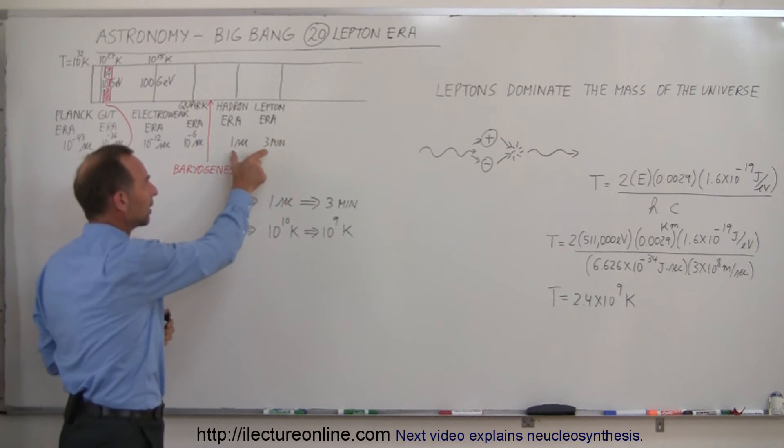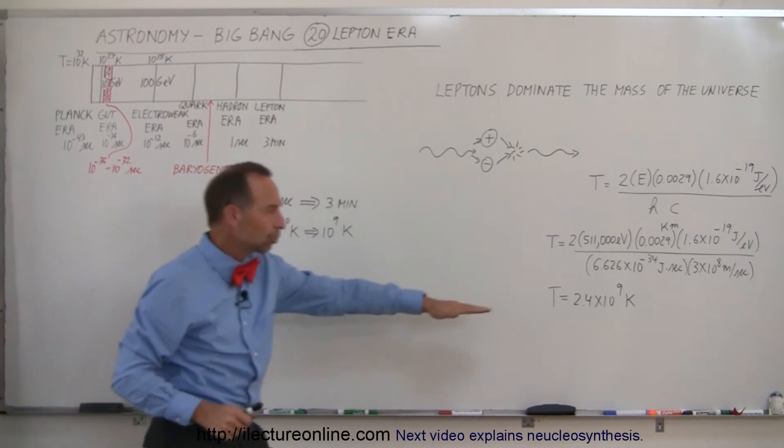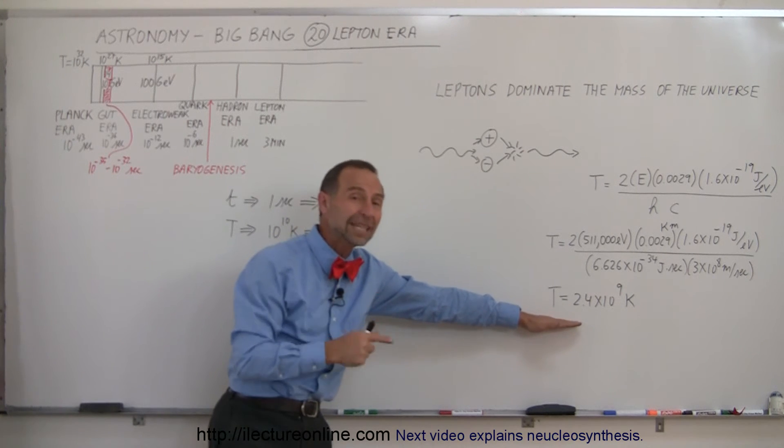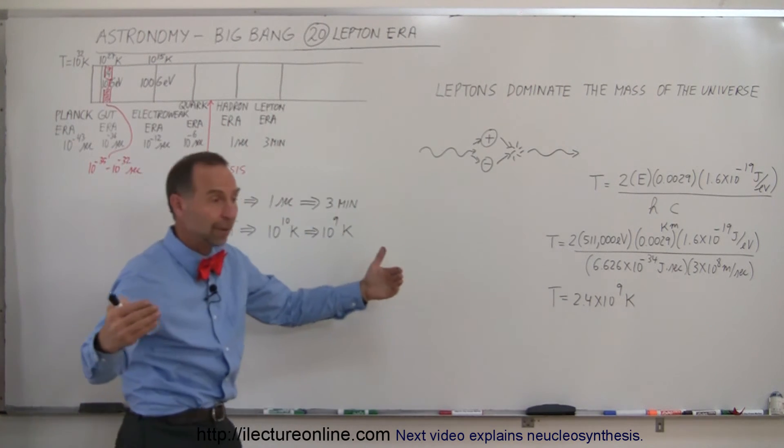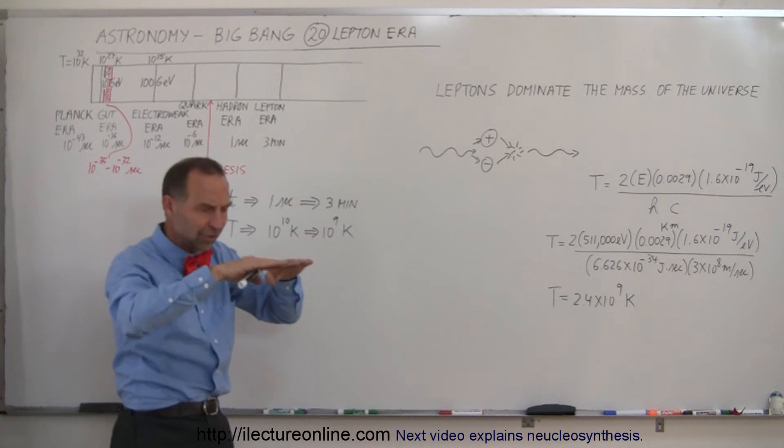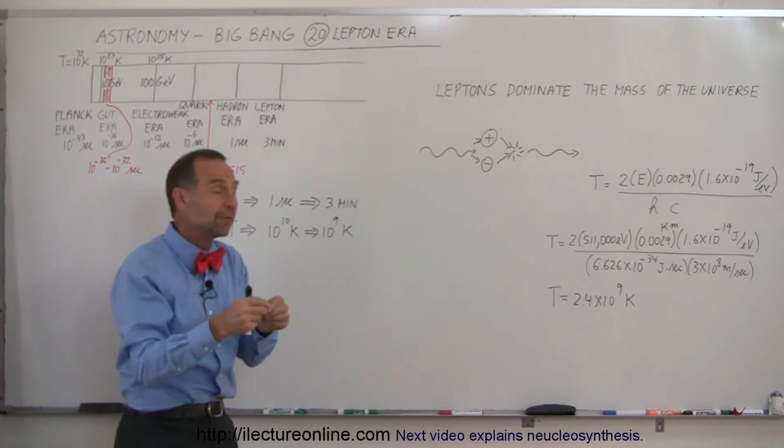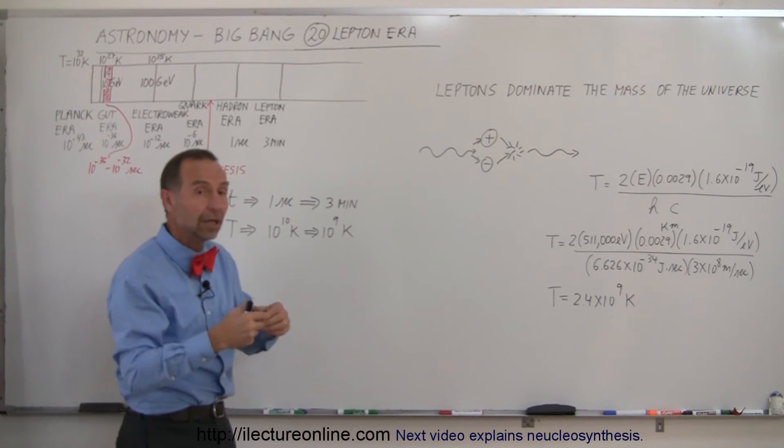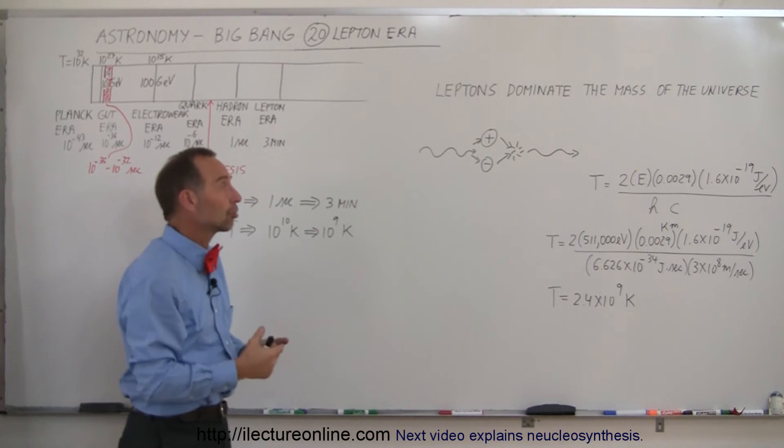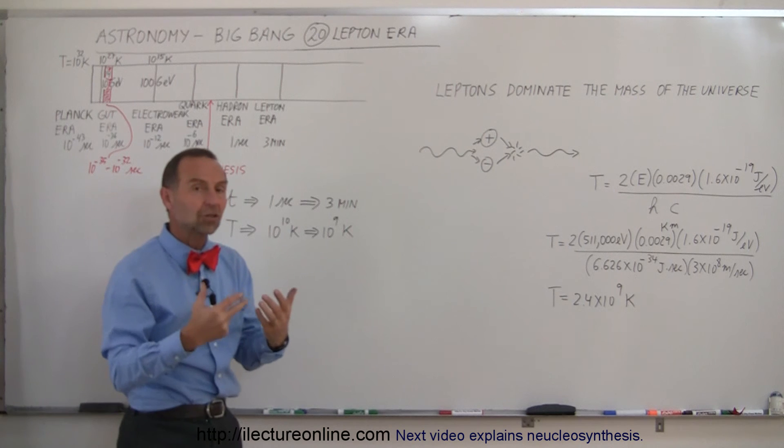But that went on for a small period of time, for about three minutes, until the temperature dropped below the critical temperature needed to make more. Again, they began all to annihilate each other since the temperature had now dropped below the point where two particles could be made from a single photon. The pair particle production stopped, they all annihilated each other.